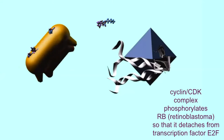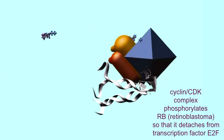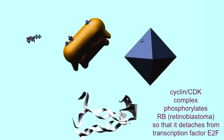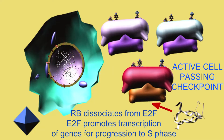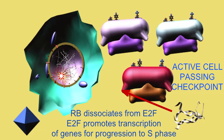In the active cell, the cyclin D-CDK complex will phosphorylate the retinoblastoma protein. This causes it to dissociate from the transcription factor E2F. This not only stops the repression of the transcription of genes for cell division that the RB-E2F complex enables,